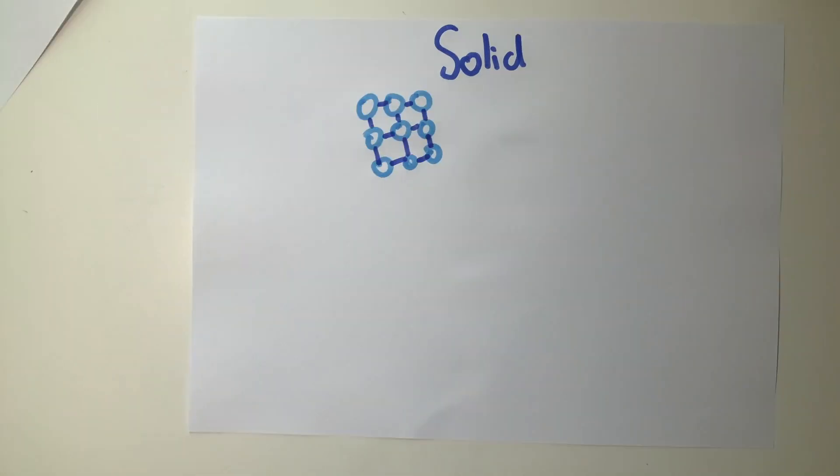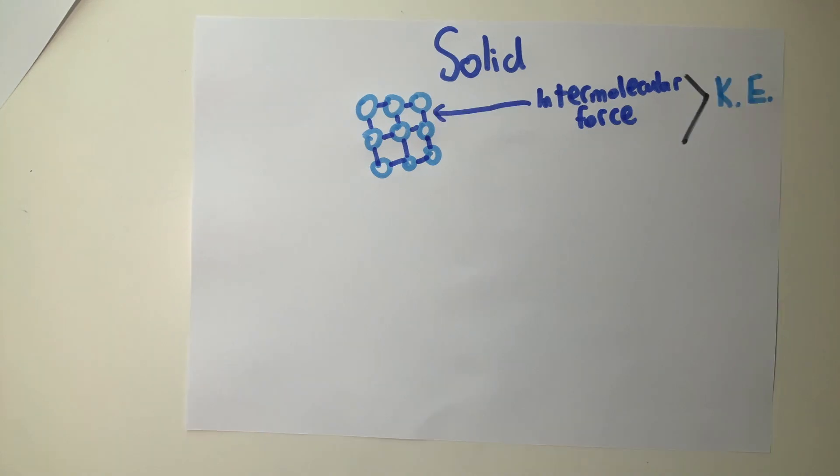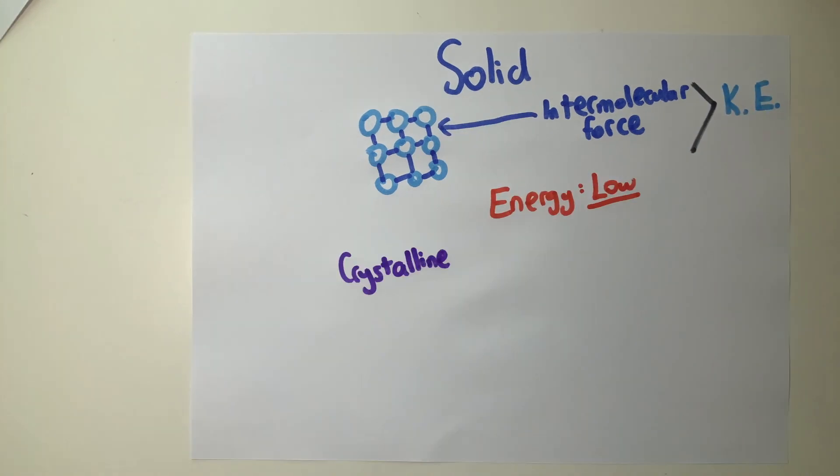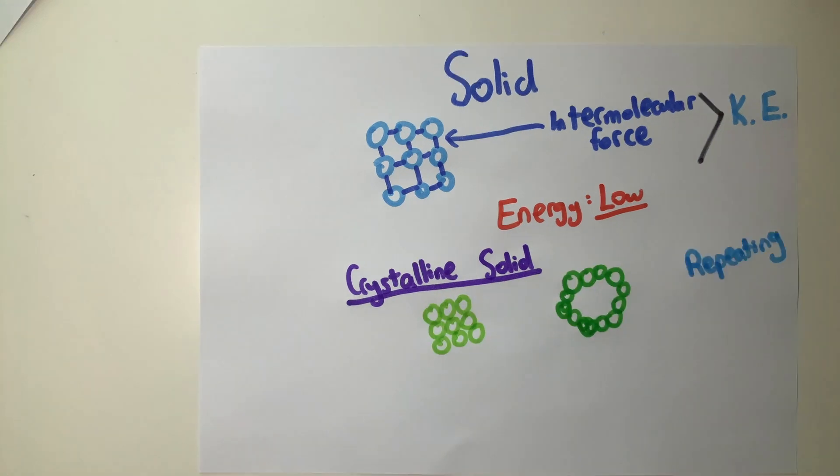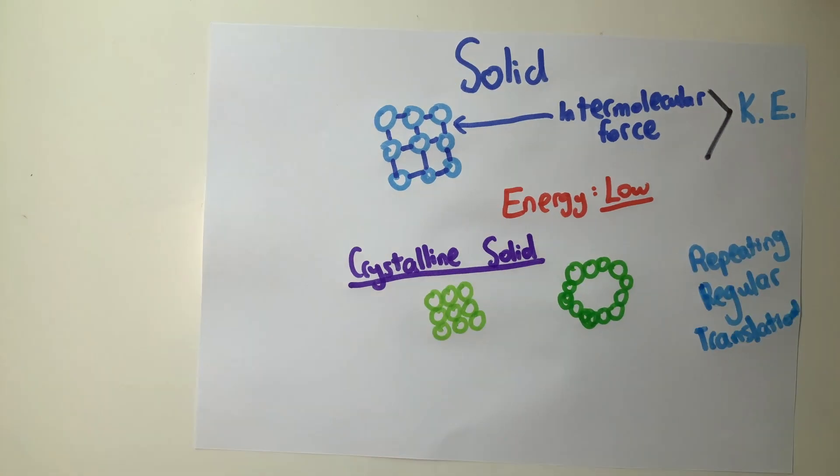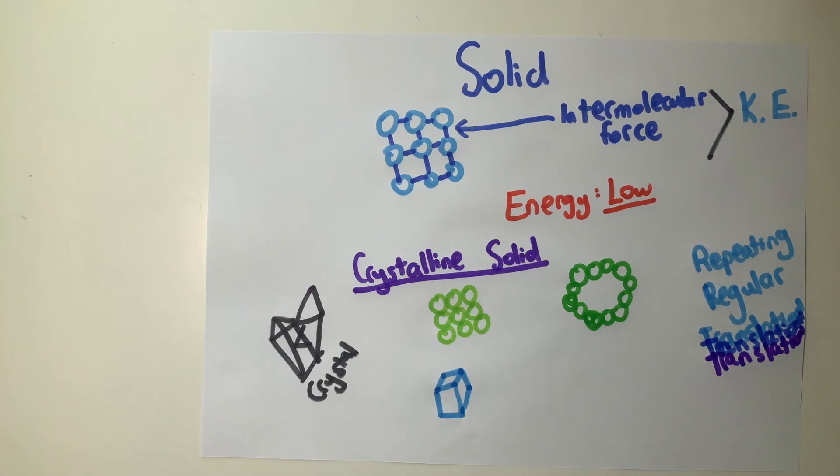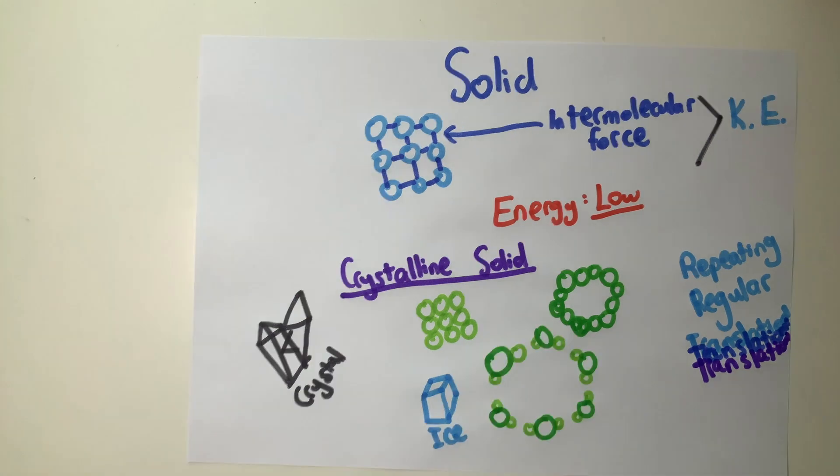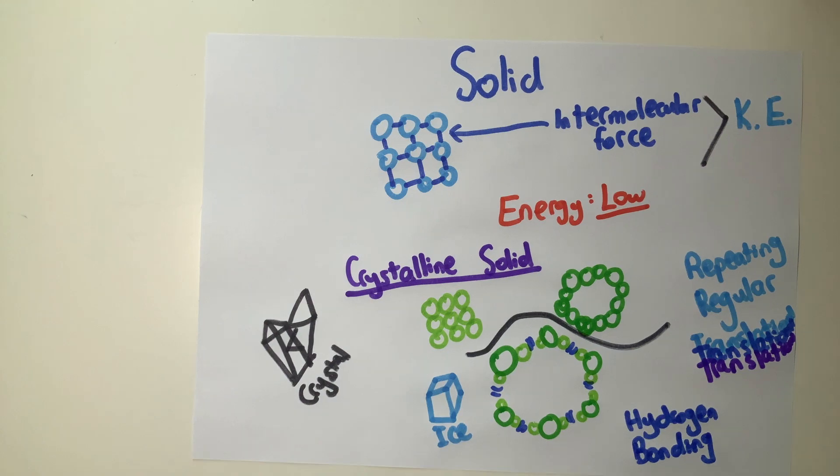Solids are a state of matter where the intermolecular forces between particles are stronger than the kinetic energy of the particles themselves. The energy is low. Solids with particles that arrange themselves in a regular, translational, and repeating pattern are known as crystalline solids. Ice, the solid form of water, is an organized crystal with a regular array of water molecules aligned in a specific orientation due to hydrogen bonding.